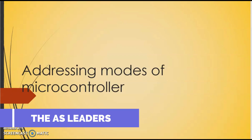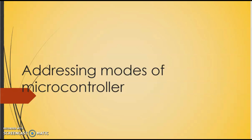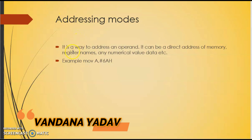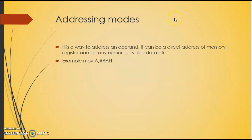Hello everyone. In this video we are going to study about addressing modes of microcontroller. Addressing mode is a way to address an operand. Operand means the data we are operating upon. For example, MOV A, #6AH — here data 6A is the operand, also known as source data. When this code is executed, data 6AH moves to accumulator A.